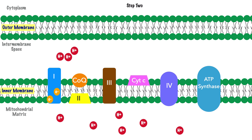As part of the second step, the proton gradient continues to build and the electrons within Complex 1 transfer to coenzyme Q, where they reside temporarily. FADH2, acquired from the citric acid cycle, attaches to Complex 2, similarly releasing its electrons into the complex — after which FADH2 becomes FAD. Importantly, Complex 2 does not function as a proton pump the way Complex 1 does; instead, these electrons are passed along to coenzyme Q.